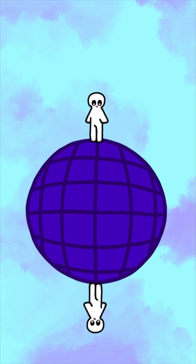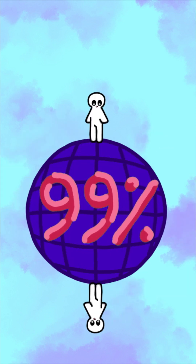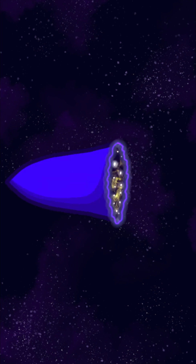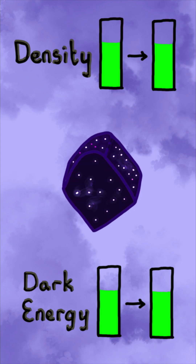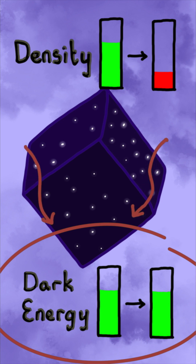Most believe our universe is flat, but recent findings suggest it's spherical with 99% certainty. But regardless of how our universe is shaped, we know it'll keep accelerating since the density of dark energy stays constant, even as the density of matter decreases.